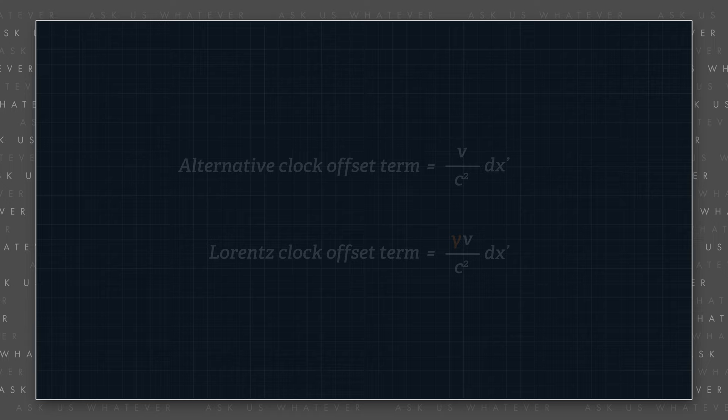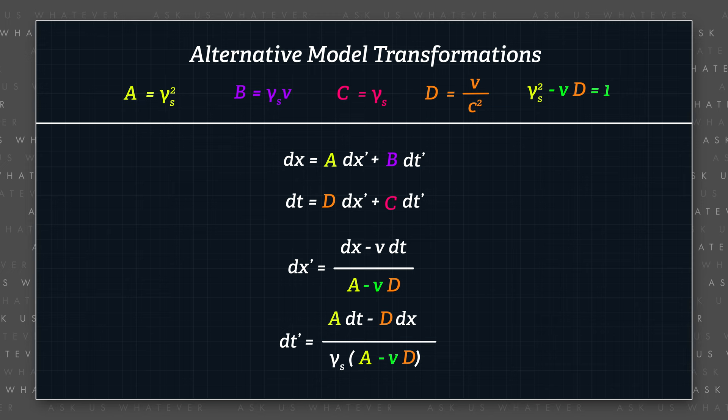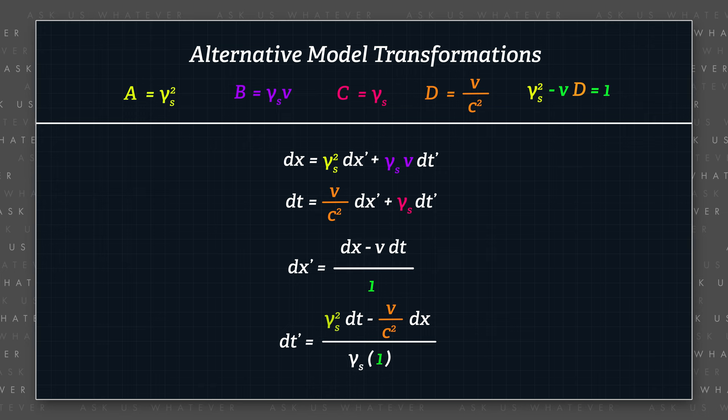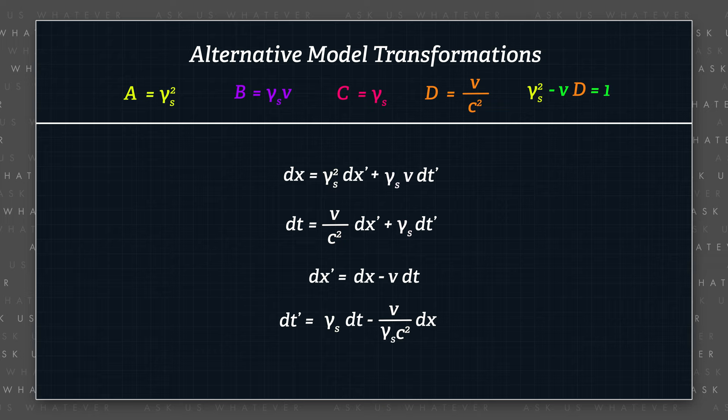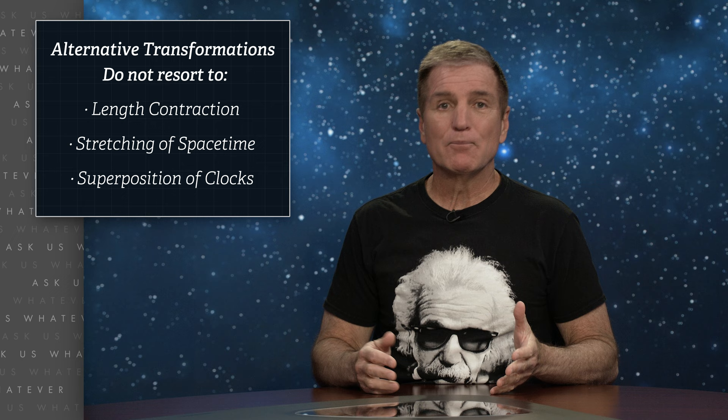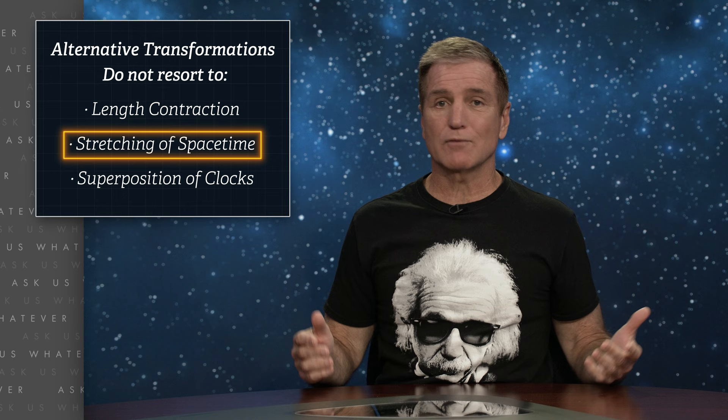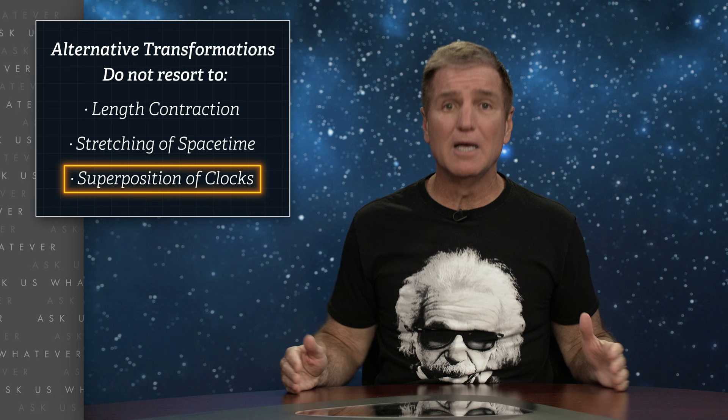So we can now write our alternative to the Lorentz transformations by substituting the values for capital A's, B, C, and D into the general formulas. These transformations describe the real-world relationship between frames s and s prime. They're a bit more complex than the Galilean transformations, but still grounded in reality. They do not resort to length contraction or the stretching of space-time or the superposition of clocks beating at two different rates at the same time. They just follow some basic rules of physics.